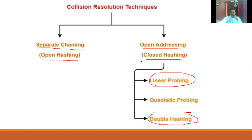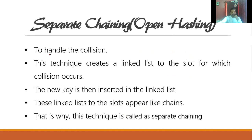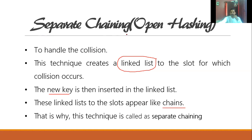Separate chaining, or open hashing, is a technique to handle collision. It creates a linked list at the slot for which the collision occurs. If there is a collision at a particular slot, a linked list — a chain — is created at that slot, and the new key is inserted into that linked list. This linked list appears like a chain, which is why it is called separate chaining.